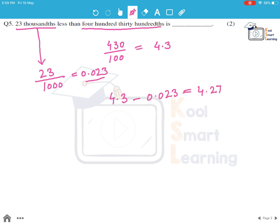23 thousandths less than 430 hundredths is... So let's first of all write down 430 hundredths. This becomes 4.3. And if we write down 23 thousandths, this becomes 0.023. So 23 thousandths less than 430 hundredths would be 4.3 minus 0.023. That comes out to be 4.277.